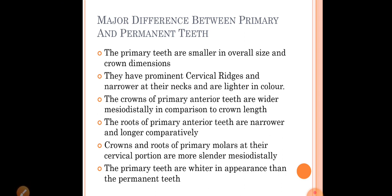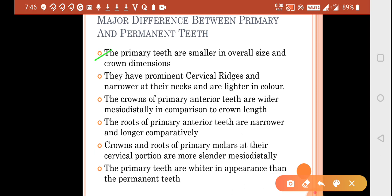Moving to the major differences between primary and permanent teeth: primary teeth are smaller in overall size and crown dimensions, while permanent teeth are larger. Primary teeth are characterized by prominent cervical ridges, which help to place the rubber dam. The crown of primary anterior teeth is wider mesiodistally compared to the crown length — they are bulkier, with more mesiodistal width but less crown length.